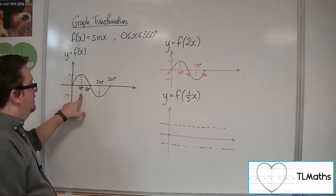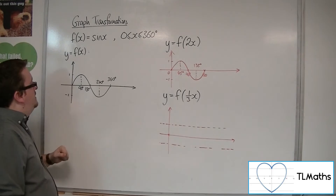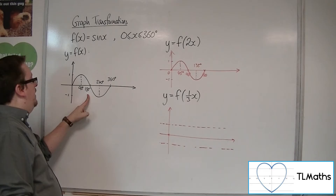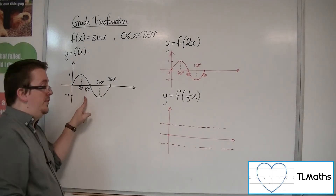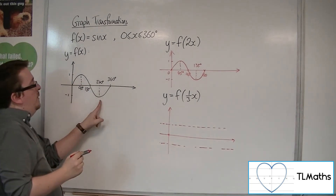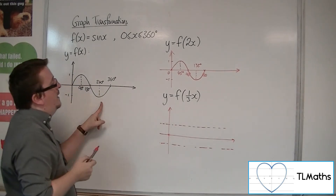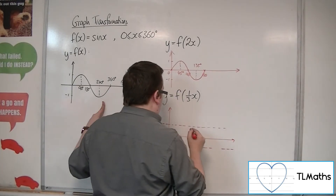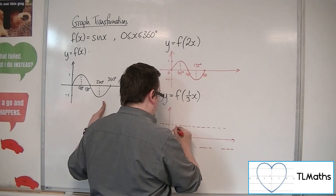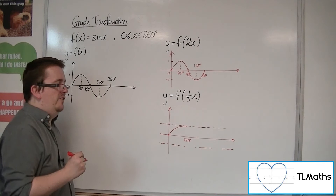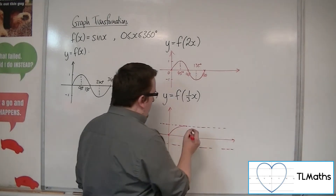When x is 90, we have f of 30. I don't quite know what f of 30 is. So let's work our way along a point. When x is 180, we've got f of a third of 180, which is 60. I don't really know what f of 60 is either, but I know it's around about there. When x is 270, a third of 270 is 90, so that would be f of 90 is 1. So we first of all get to 1 when we're at 270 degrees.